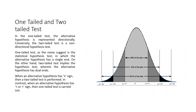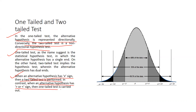To summarize: in a one-tailed test, the alternative hypothesis is represented directionally. In a two-tailed test, it is a non-directional hypothesis. A one-tailed test has a single end in the alternative hypothesis; a two-tailed test has dual ends. When the alternative hypothesis has a not-equal-to sign, a two-tailed test is performed. When it has a greater-than or less-than sign, the one-tailed test is carried out.